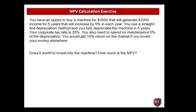Net Present Value calculation exercise: You have an option to buy a machine for $3,500 that will generate $1,000 income for 5 years, increasing by 5% each year. You use straight-line depreciation, fully depreciating the machine over 5 years. Your corporate tax rate is 25%, and you also spend on maintenance at 5% of depreciation. You would get 10% return on the market if you invest your money elsewhere. Is it worth investing in the machine? How much is the net present value? Try to solve this exercise alone first, then look at the solution on the next slide.